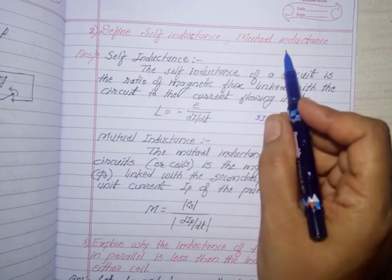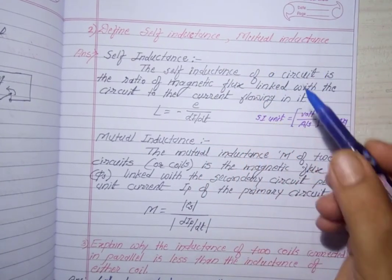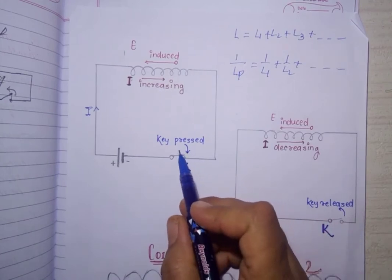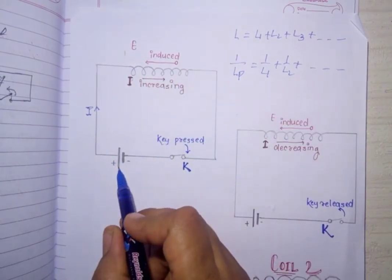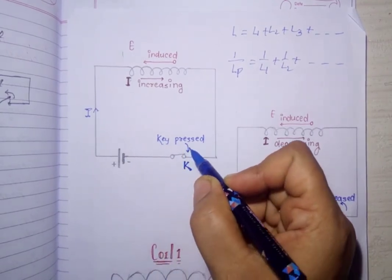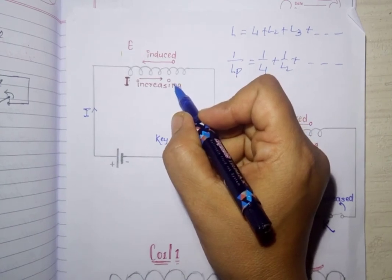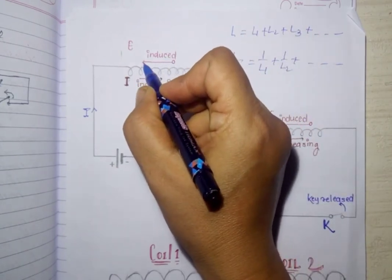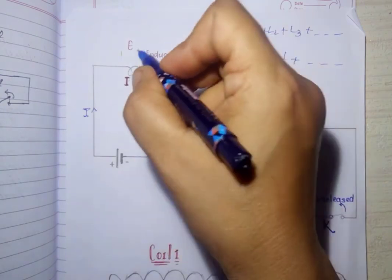The second question is: define self inductance and mutual inductance. I will explain these with the help of diagrams, which are also given in your textbook. Here is a coil connected to a battery and key. When we close the key, the current increases in the coil, producing an increasing magnetic field. Due to the change in magnetic flux, an induced EMF is produced in the direction opposite to the direction of current. Thus, the induced EMF is produced in the coil due to the rate of change of current in the same coil.